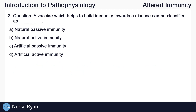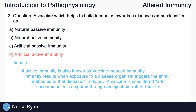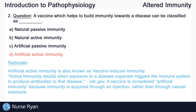Moving on to question number two: a vaccine which helps to build immunity towards a disease can be classified as... This one is D, artificial active immunity. Artificial active immunity is also known as vaccine-induced immunity. Active immunity results when exposure to a disease organism triggers the immune system to produce antibodies to that disease, which is what a vaccine does. A vaccine is considered artificial immunity because it is artificially acquired through an injection, rather than being obtained naturally through exposure.